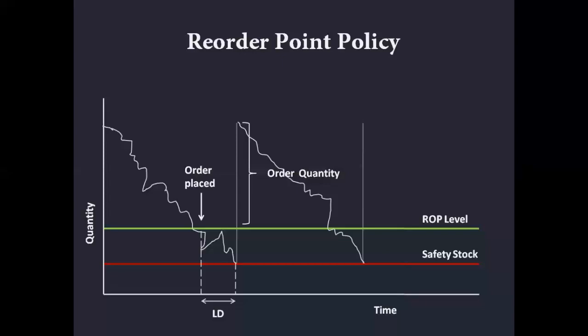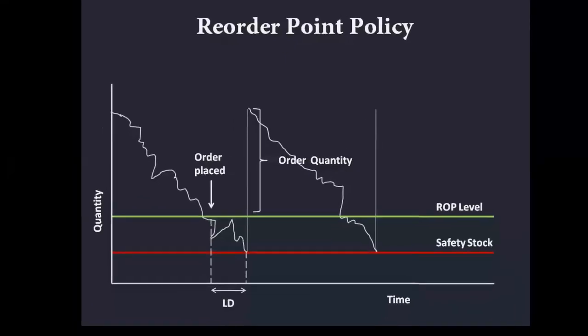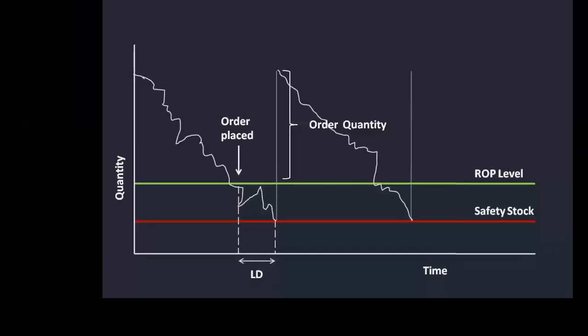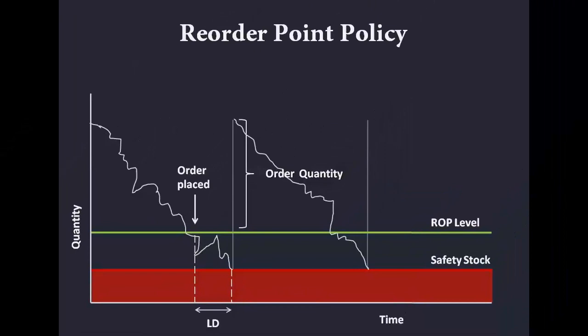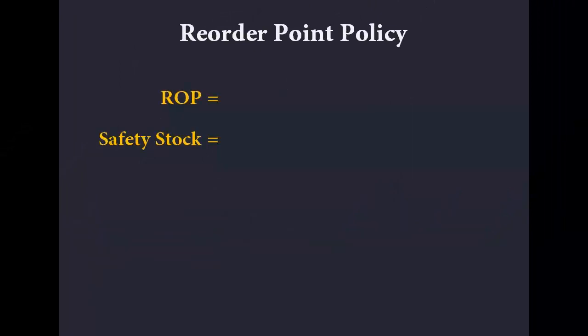We still have a lead time, and that is why we have an expected lead time demand — how much we think we are going to use during the period between placing the order and its reception. Notice we do not let inventory go all the way down to zero; instead we have that red line, and that is our safety stock. When we add the safety stock to the expected lead time demand we get a different reorder point policy.